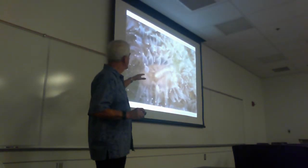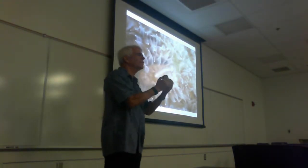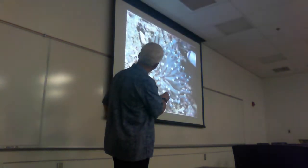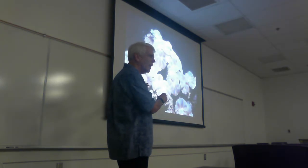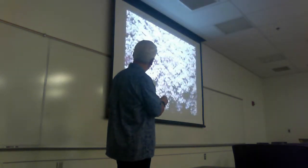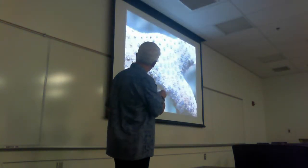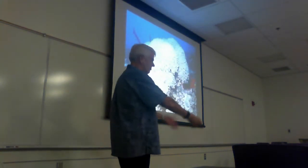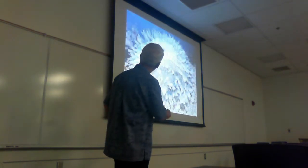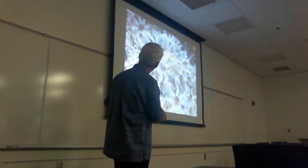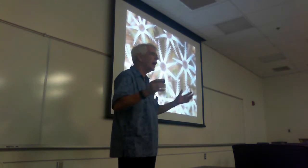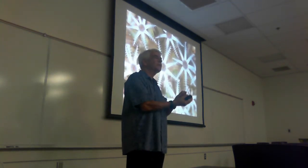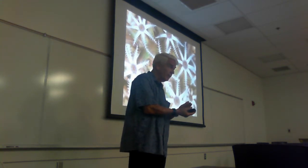Corals are so different in the kinds of polyps they have - here you can see long polyps, tiny polyps, various forms. Despite all these different polyp types, they all evolve different ways while still secreting the same type of skeleton. They're basically the same fundamental form.